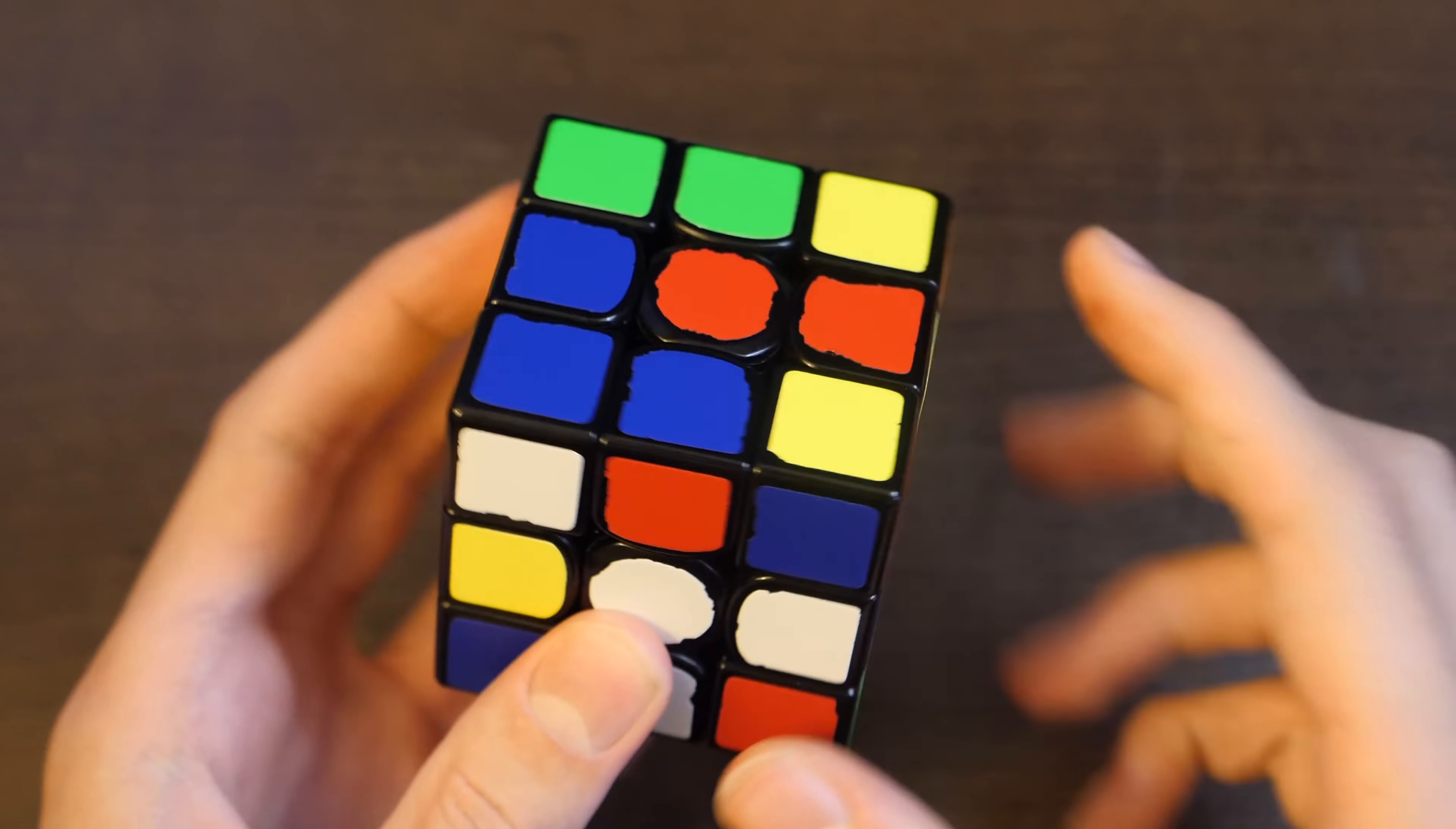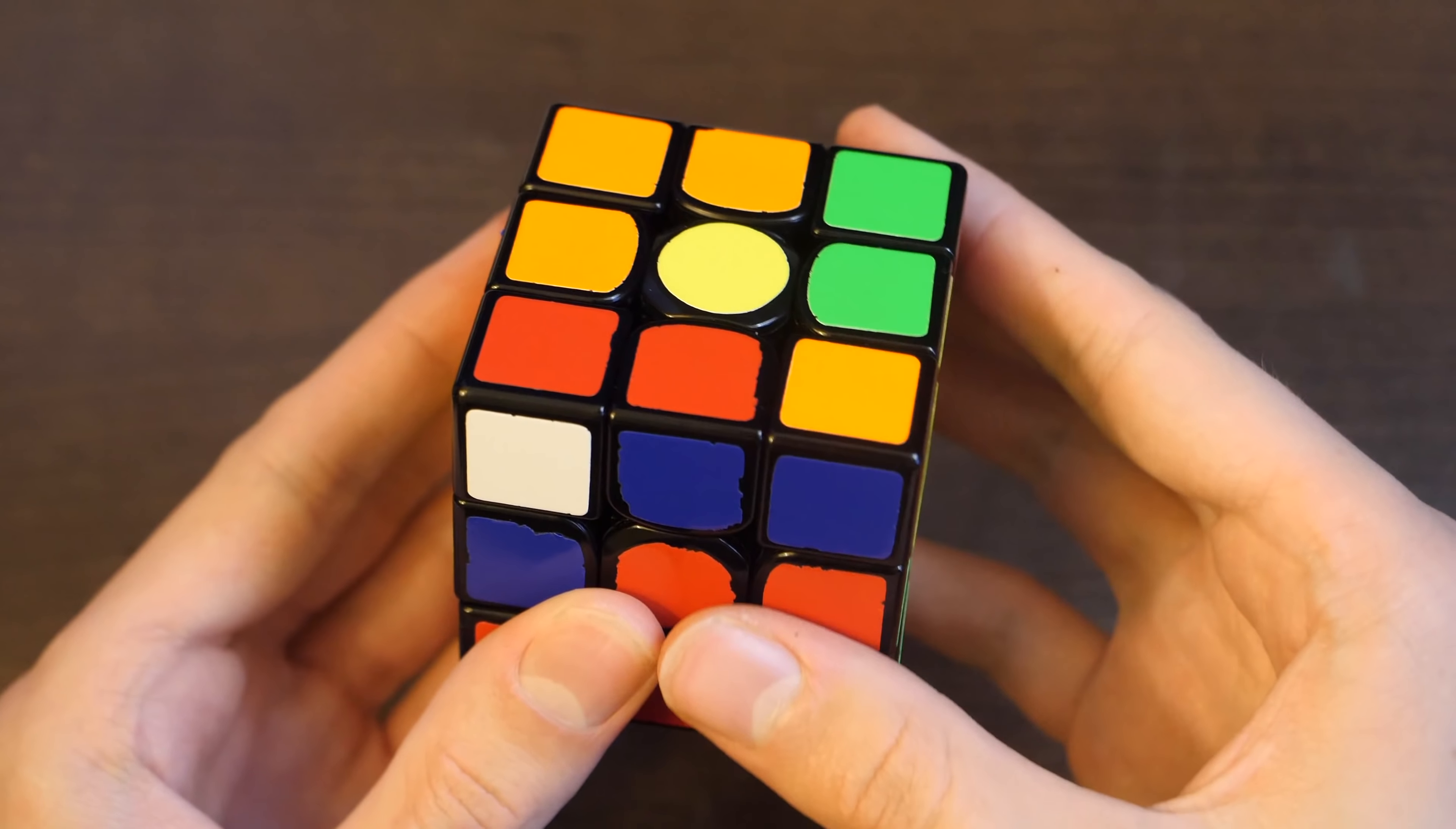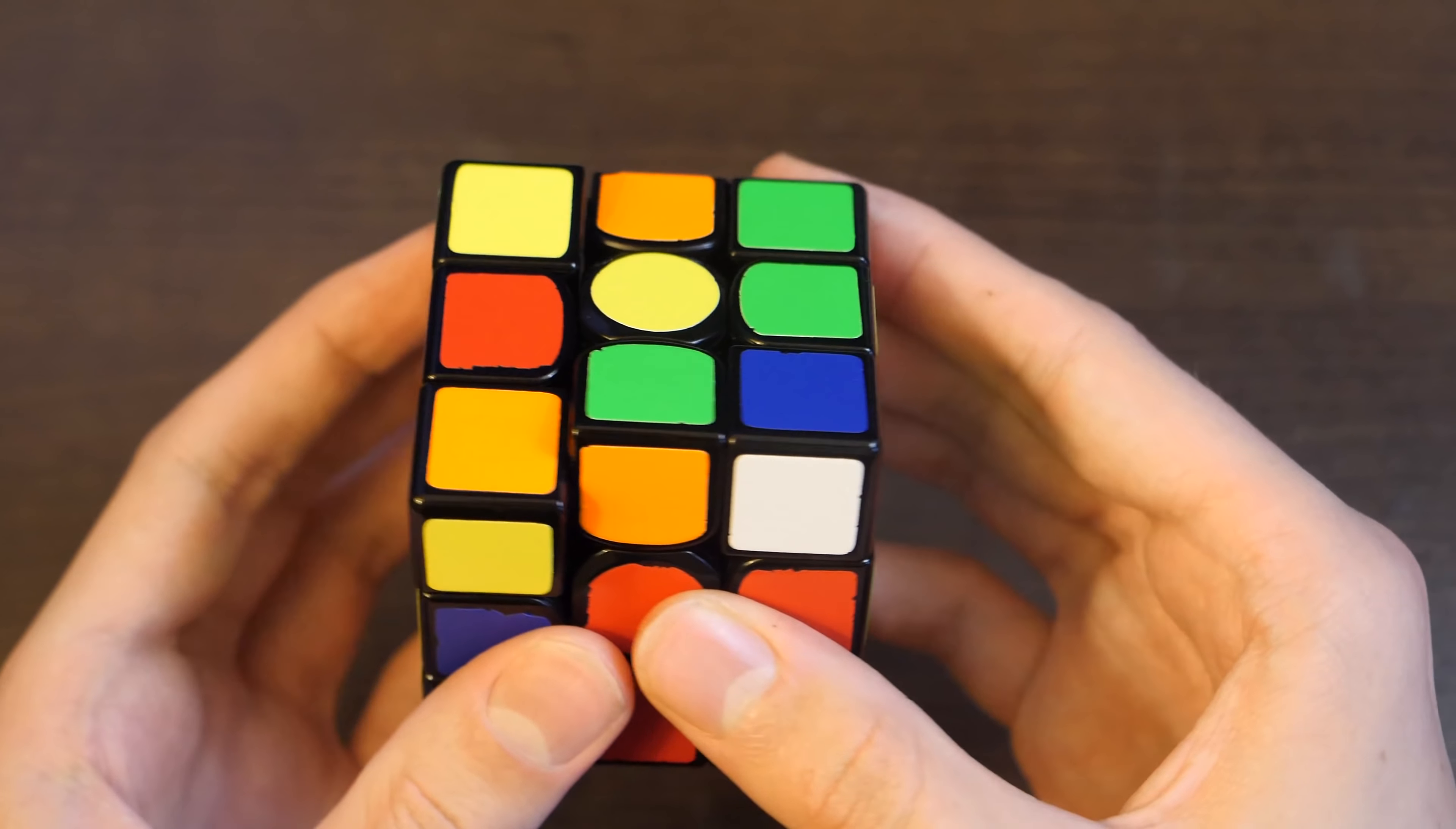For the fifth solve, his cross pieces are here, here, here, and here. So he's got a pretty easy setup here with a free pair. So he does them very logically.